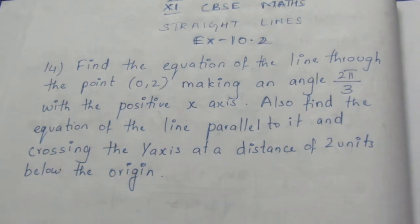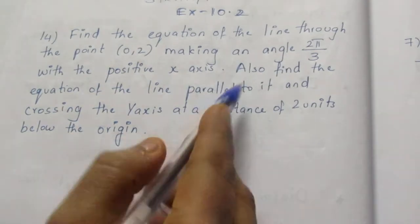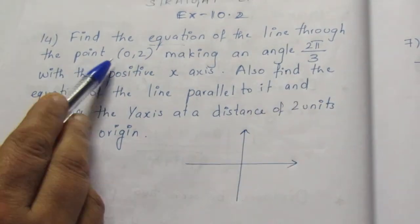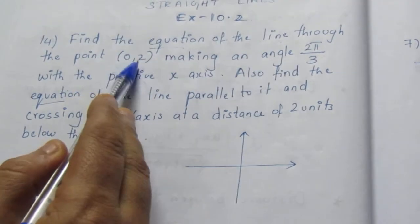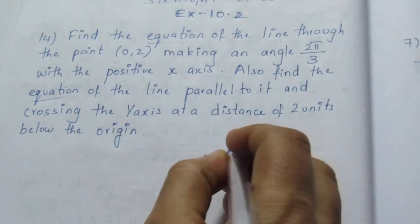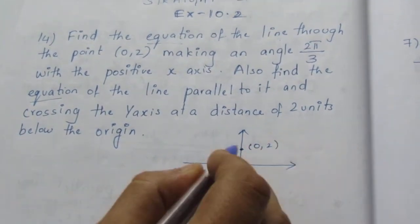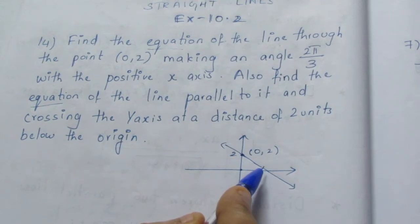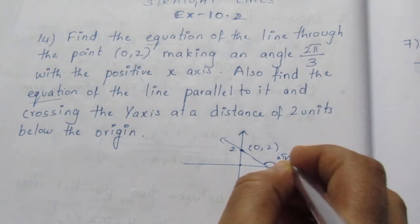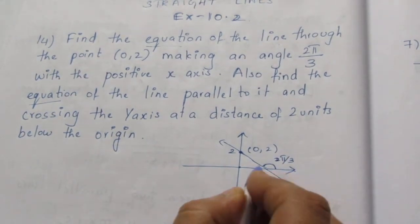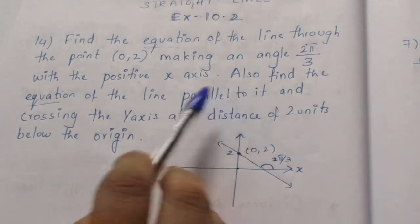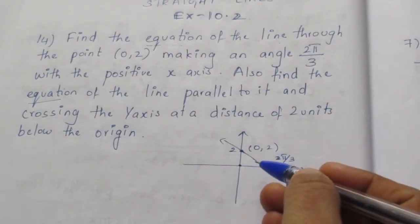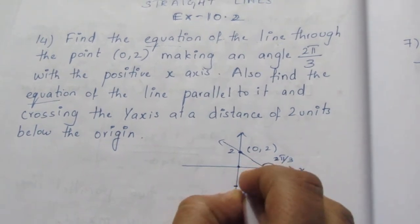Let me draw a diagram so that you can easily understand. We need to find two equations here. Let me draw a Cartesian plane. I will find the equation of a line passing through (0, 2) — that point will be here on the y-axis. So we want a line passing through it, making an angle 2π/3 with the positive side of the x-axis. Another line is parallel to it, crossing the y-axis at 2 units below the origin, which means that point is (0, -2).